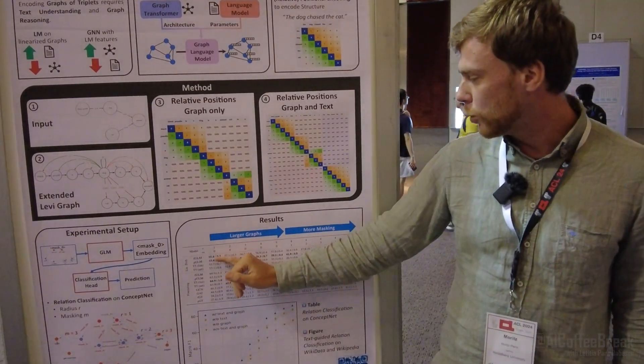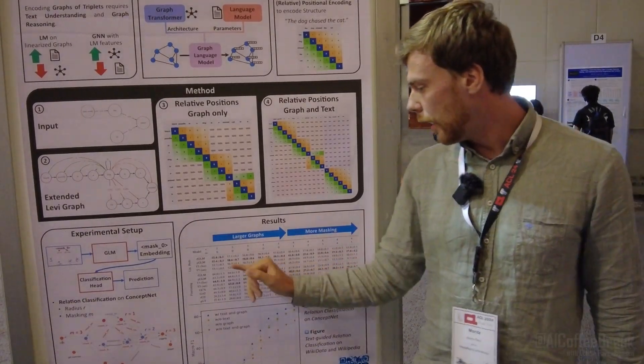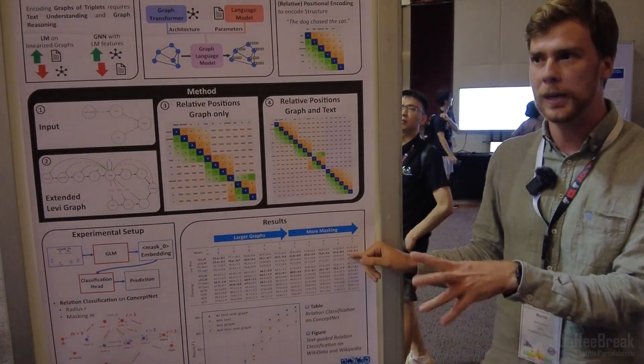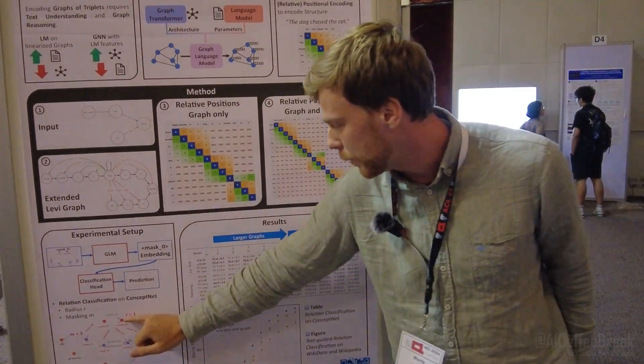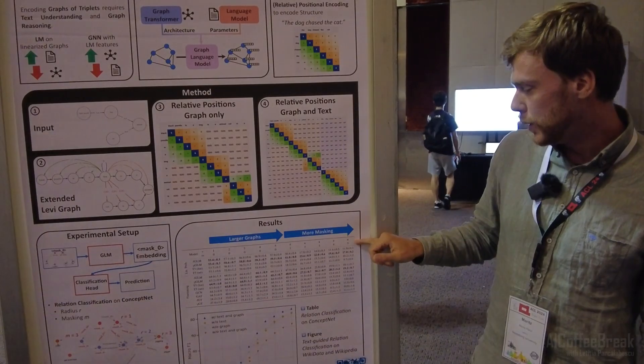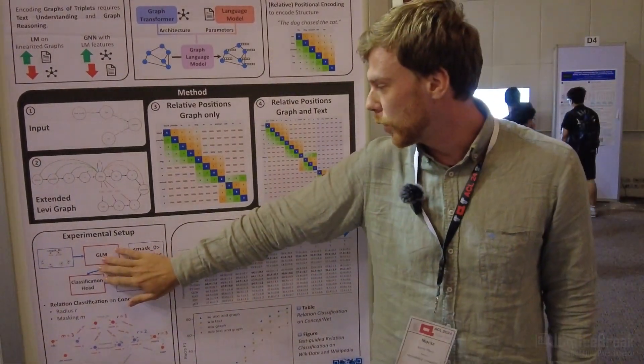We see that even then the graph language model outperforms the graph linearization baselines, especially when graphs are larger or when we mask relevant parts around the graph. When we mask neighboring concepts, making the graph structure more important, the graph language model outperforms more.